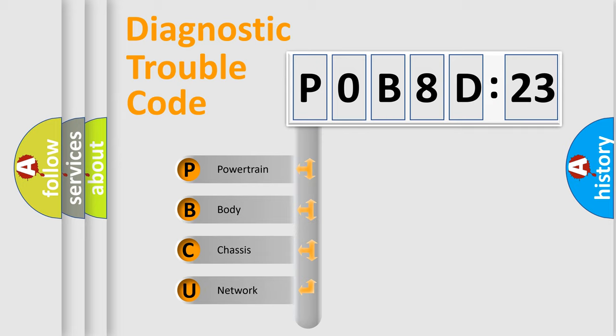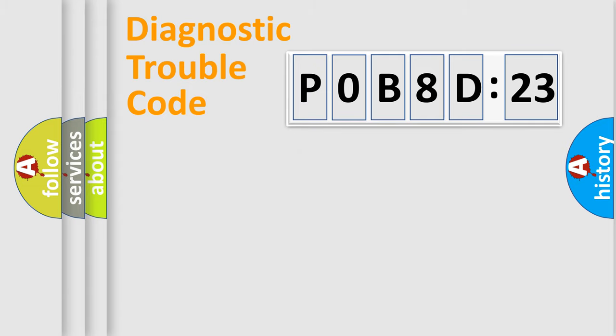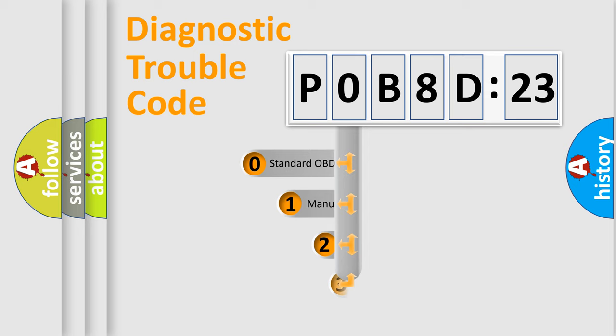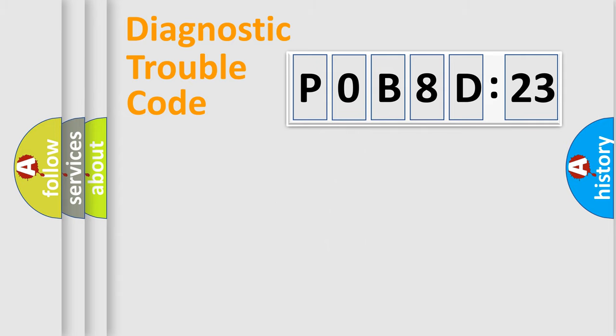If the second character is expressed as zero, it is a standardized error. In the case of numbers 1, 2, 3, it is a more prestigious expression of the car-specific error. The third character specifies a subset of errors. The distribution shown is valid only for the standardized DTC code. Only the last two characters define the specific fault of the group.